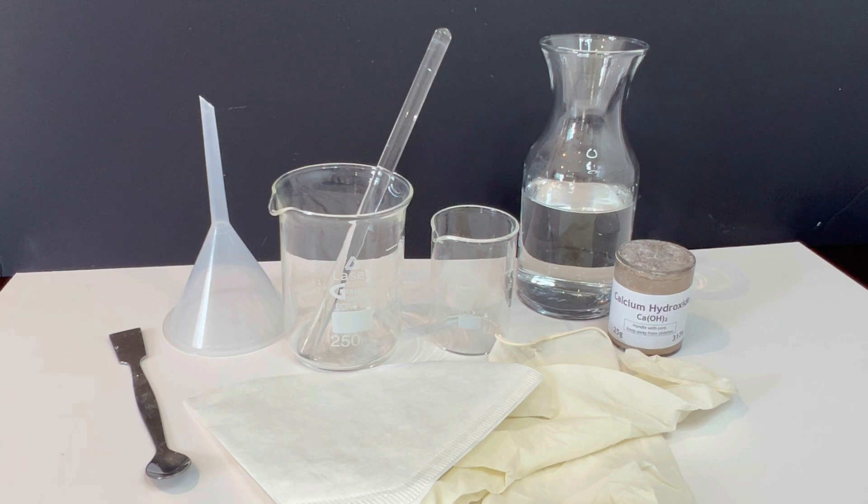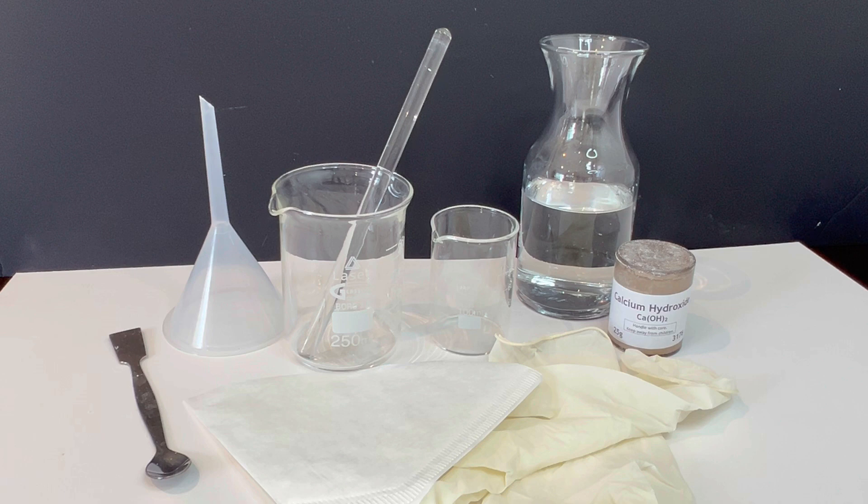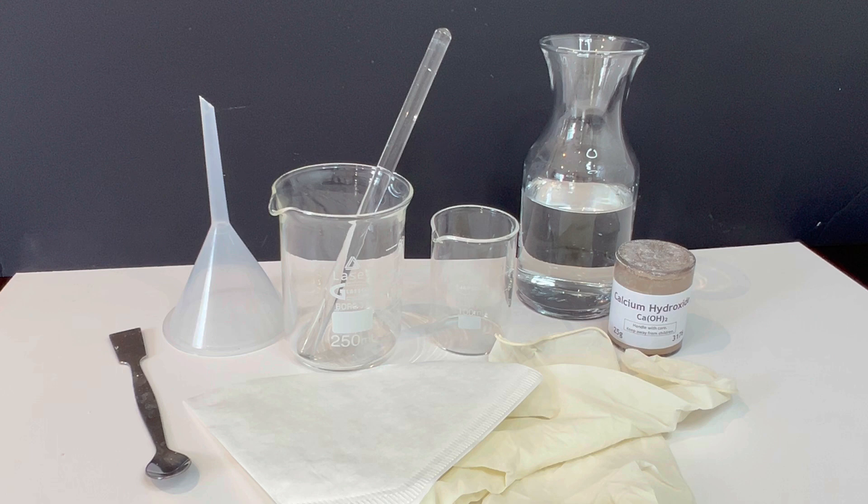Now to prepare lime water, you will need the following materials: calcium hydroxide powder, also known as slaked lime, water, a beaker, a glass rod, filter paper, a funnel, a second beaker, and safety goggles and gloves.